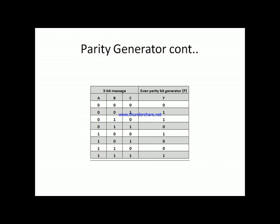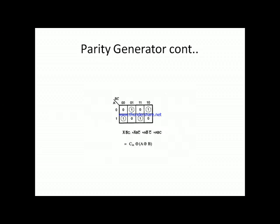Three steps of the design process are complete. Now we derive the Boolean function for Y. First we identify the minterms where Y equals 1: these are the combinations 001, 010, 100, and 111. We plot these values on a three-variable K-map.